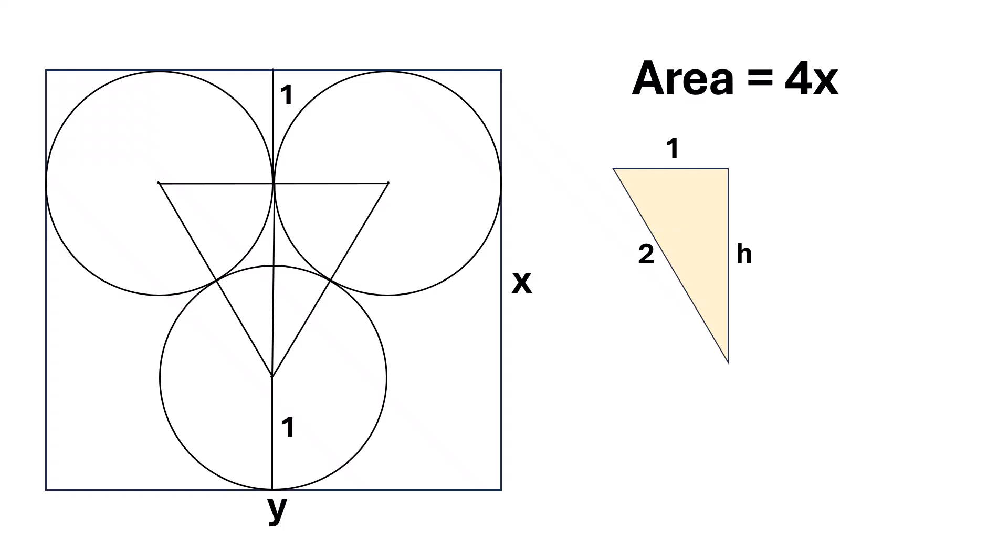Using the Pythagorean theorem, we can say h squared plus 1 squared is equal to 2 squared. Solving this equation, we get the value of h is square root of 3.